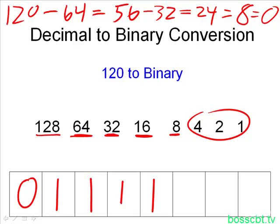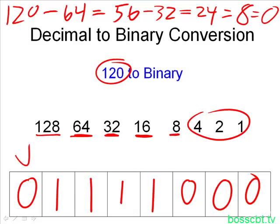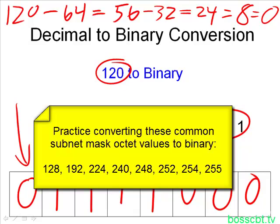The remaining bit positions, since we didn't use them, we just put 0s in there. And so in our octet, the binary representation of 120 is 0, 1, 1, 1, 1, 0, 0, 0. Now, 120 is not a decimal number that you will commonly see in a subnet mask. However, it helps to choose any random number to work through this process. The more you do this, the better you're going to get at it. The more you subnet, the more familiar you'll become with this process, and soon you're just going to know what they look like. So that is the process of converting a decimal to a binary. Go ahead and practice, and thanks for watching.